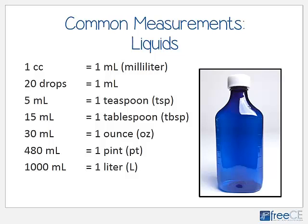For basic information, it's really important that everyone knows: 1 cc or cubic centimeter is the same as 1 milliliter; there are 5 milliliters in 1 teaspoon; 15 milliliters in a tablespoon; 30 milliliters in an ounce; about 480 milliliters in a pint; and 1000 milliliters in a liter.